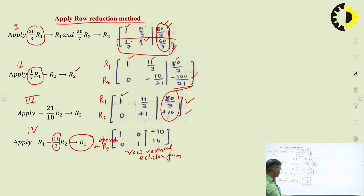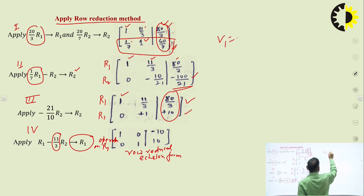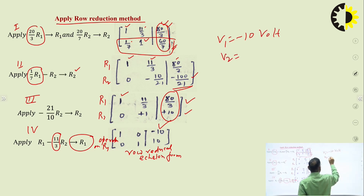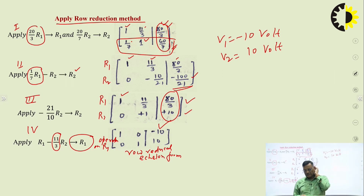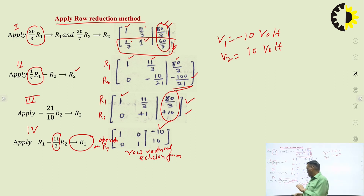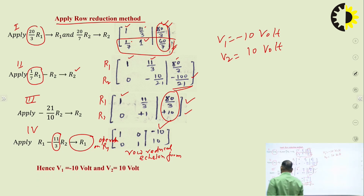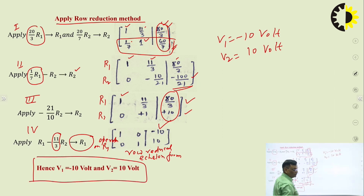Once we get the reduced row echelon form, we can find the values of V1 and V2. The value of V1 is minus 10 volts and V2 is 10 volts. This is the answer. Our job was to find the node voltages V1 and V2 using the matrix approach.